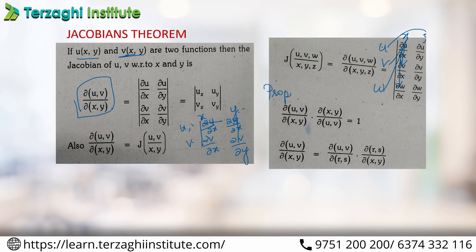Similar properties: this question will be asked directly. The inverse property: ∂(u,v)/∂(x,y) multiplied by ∂(x,y)/∂(u,v) equals 1. Next property: if r and s depend on a function, then ∂(u,v)/∂(x,y) equals ∂(u,v)/∂(r,s) into ∂(r,s)/∂(x,y). So r,s cancels — this is the chain rule property of Jacobians.